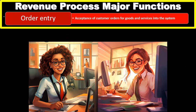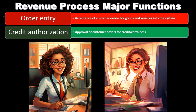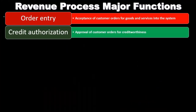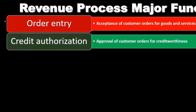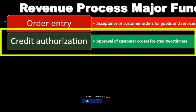Then we're going to have some type of credit authorization if we're in a system where we have sales on account — the credit authorization being an approval of customer orders for creditworthiness.